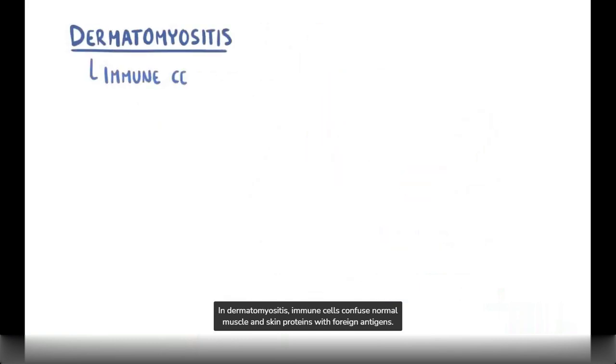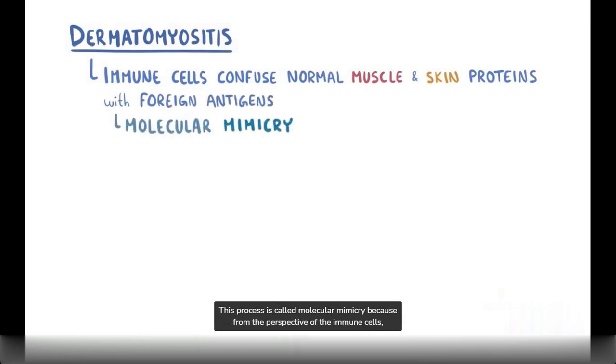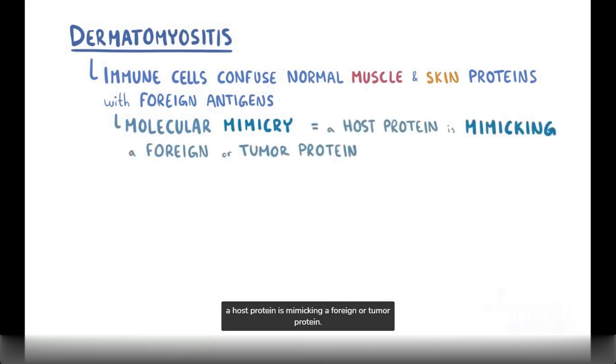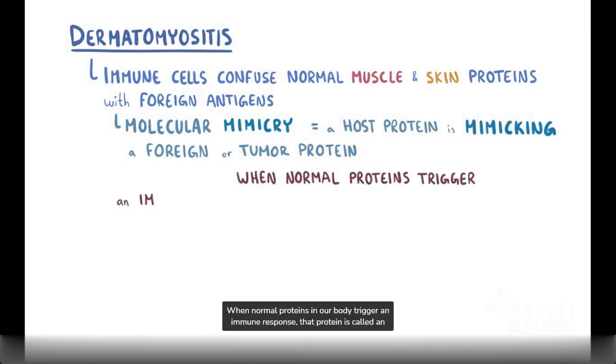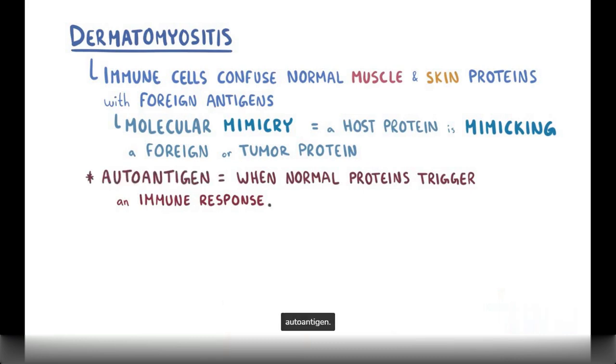In dermatomyositis, immune cells confuse normal muscle and skin proteins with foreign antigens. This process is called molecular mimicry because from the perspective of the immune cells, a host protein is mimicking a foreign or a tumor protein. When normal proteins in our body trigger an immune response, that protein is called an autoantigen. These autoantigens get picked up by B lymphocytes, which start producing antibodies against them.